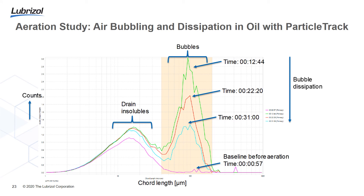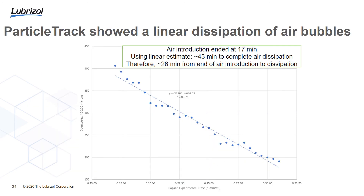Looking at size distribution between 0.5 and 1000 micrometers in highly contaminated oil, we observe two distinct size regimes: drain insoluble particles around 10 to 20 micrometers and bubbles around 100 micrometers at different times. ParticleTrack was able to differentiate particles and bubbles separately. We can plot air bubble dissipation rates for bubbles between 40 and 100 micrometers, and ParticleTrack showed a linear dissipation of air bubbles. This probe-based technology can thus be utilized to track bubble dissipation rates and optimize hydraulic machinery or formulations.